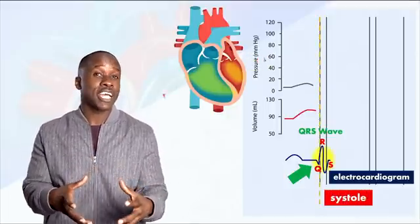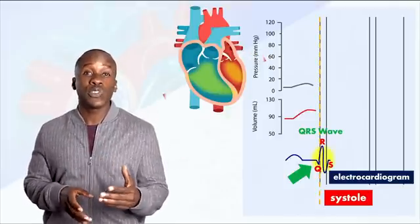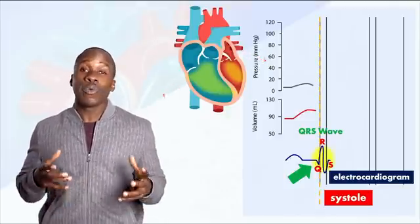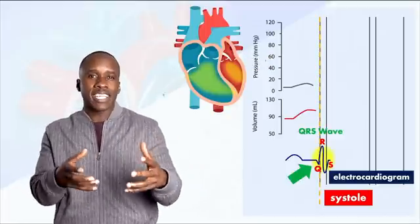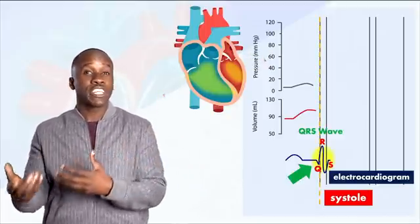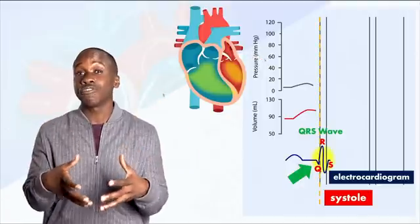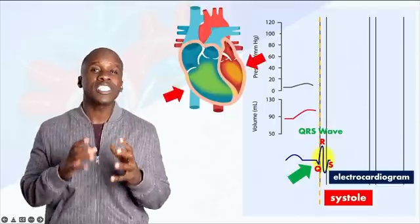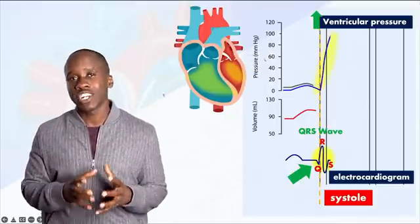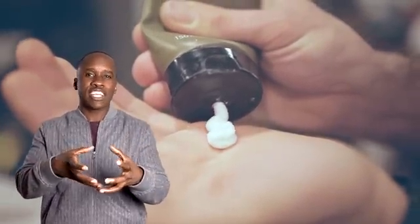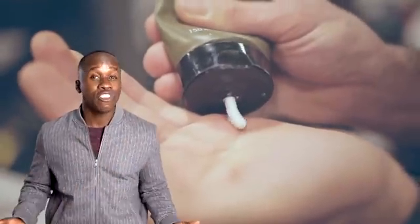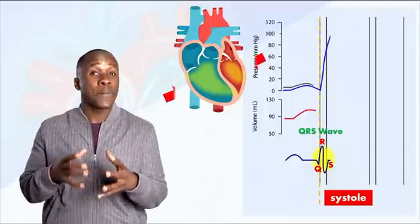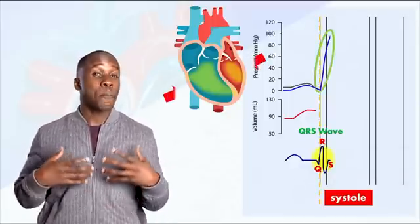When they contract, what will that do to the pressure in the ventricles? Well, during atrial contraction, we did get a little increase in ventricular pressure, of course, because blood was rushing into the ventricles. But now that the ventricles are contracting, you're gonna see a much greater increase in ventricular pressure. And it makes sense. You have a container that you're squeezing, and when you squeeze that container, the pressure inside that container increases. In this case, the container is the ventricles. It's made up of pretty strong muscle, so we get a significant increase in pressure.